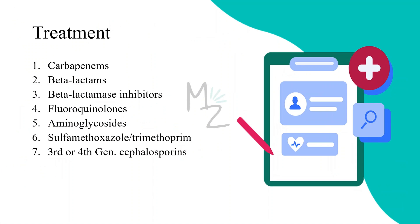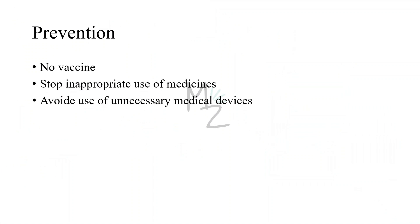Treatment of infections caused by Enterobacter cloacae involves carbapenems, beta-lactams, beta-lactamase inhibitors, fluoroquinolones, aminoglycosides, trimethoprim-sulfamethoxazole, and third or fourth generation cephalosporins. Prevention: there is no vaccine available. Patients should avoid inappropriate use of medicines and unnecessary medical devices such as urinary catheters when not required.